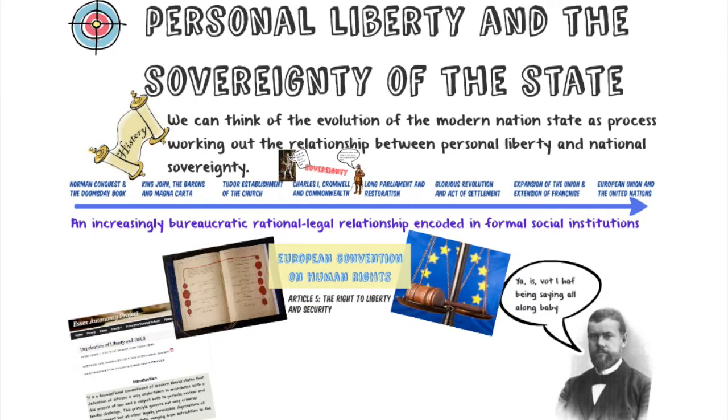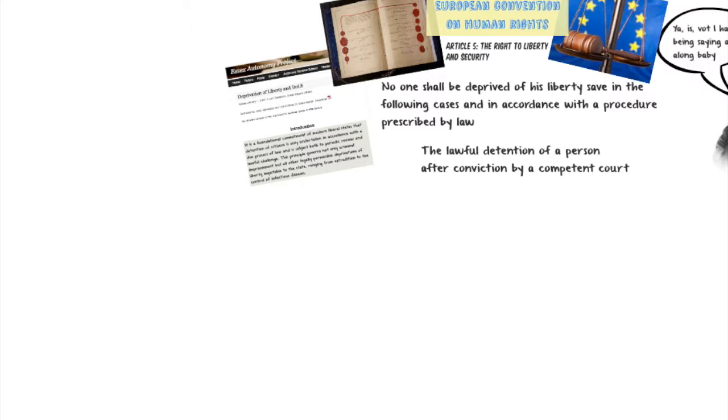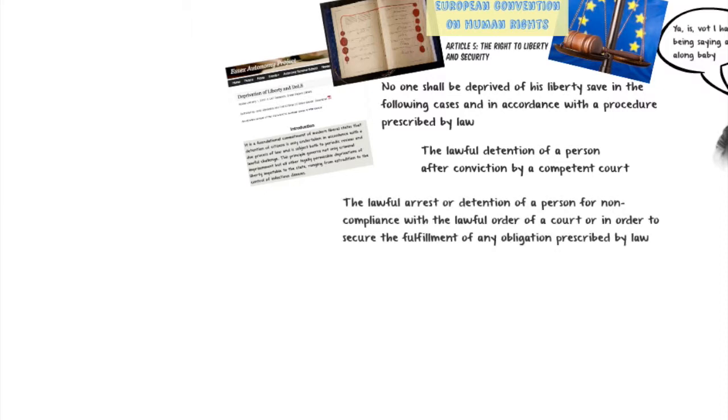Now we think about the European Convention on Human Rights, in particular Article 5 — our right to liberty and security. It states: no one shall be deprived of his liberty save in the following cases and in accordance with the procedure prescribed by law. It is written in old-fashioned sexist language but clearly intends to apply to all. The exceptions prescribed by law include: lawful detention of a person after conviction by a competent court — so if you are found guilty of breaking the civil or criminal code and the court rules imprisonment as punishment, the state may deprive you of your liberty.